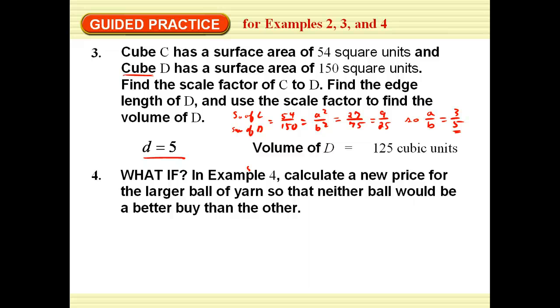What if, in example 4, calculate a new price for the larger ball of yarn so that neither ball would be a better buy than the other? In order to do that, you would have to make it $12. What we do is we take the scale factor, which was 8 to 1, is equal to, we need the price of the large ball. Now we need the price of the small ball, and then we calculate the price for the large ball.